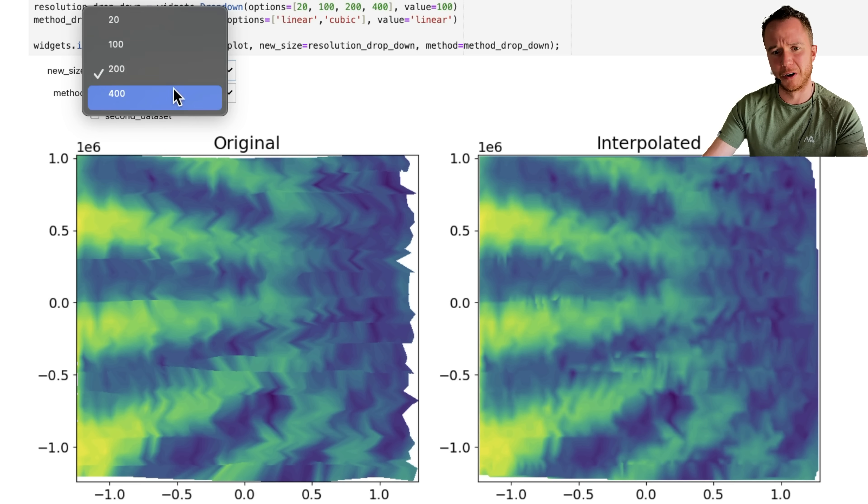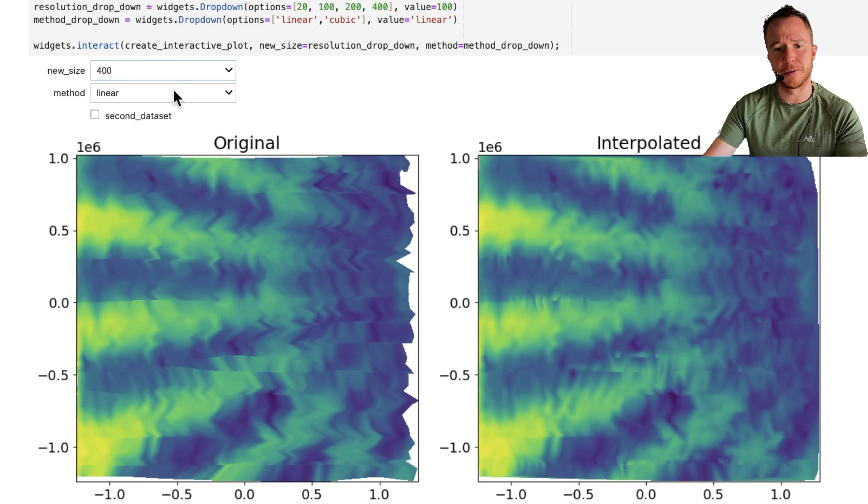We go to 200, it's a little bit better, and go to 400, basically no difference. So the sweet spot in terms of accuracy and computational costs would probably be at 200.